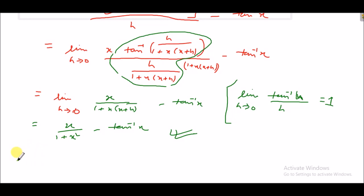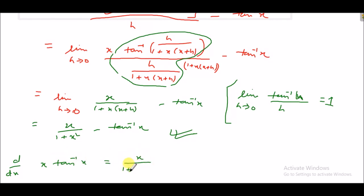So we get d/dx of x·tan inverse x is equal to x upon (1 plus x square) minus tan inverse x.